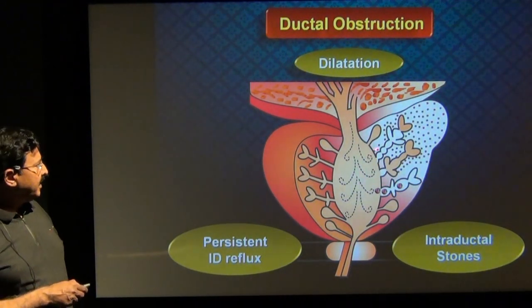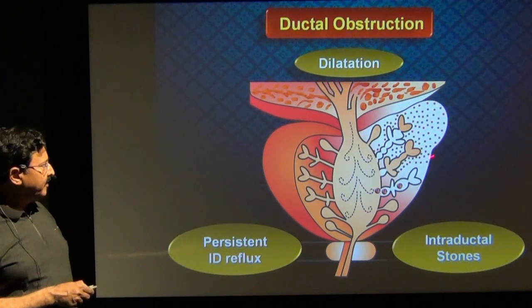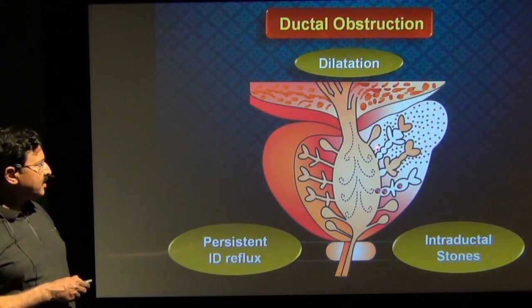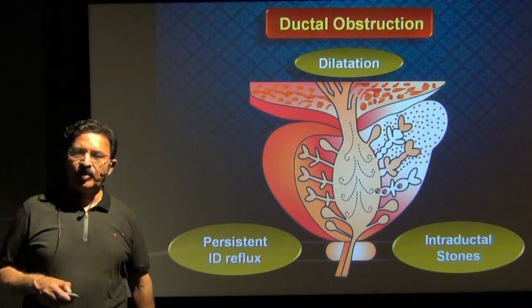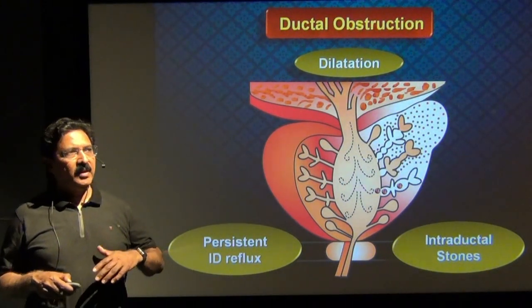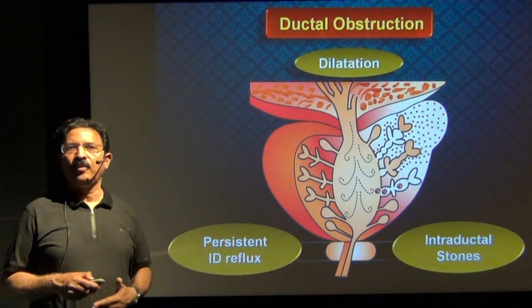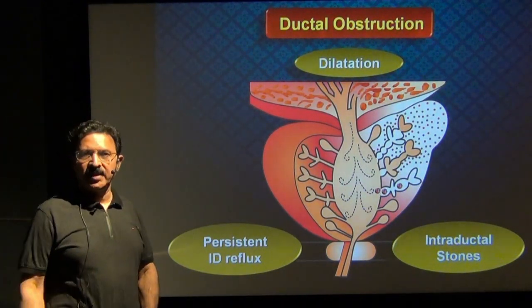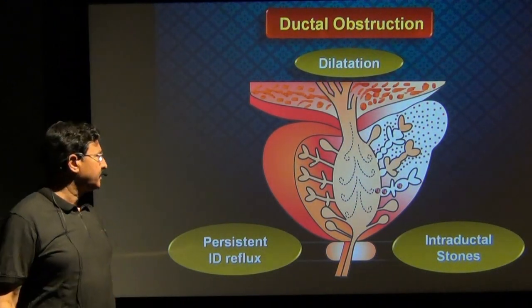In somebody where the obstruction has been present for some time, the rest of the gland which has been draining through these ducts develops a patch of inflammation — that is focal prostatitis to begin with. In time, it can expand like a fire in the jungle and involve the entire prostate gland, giving rise to what we know as prostatitis.